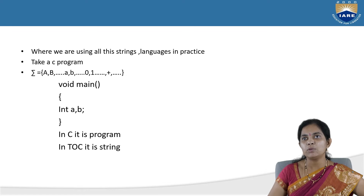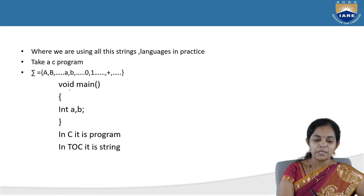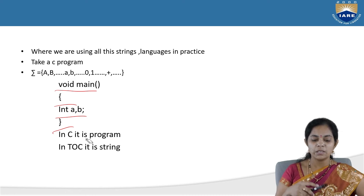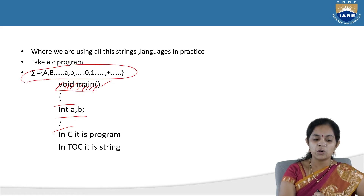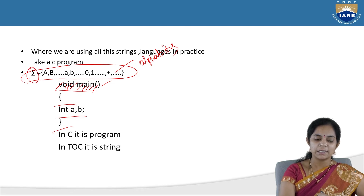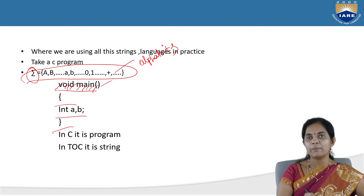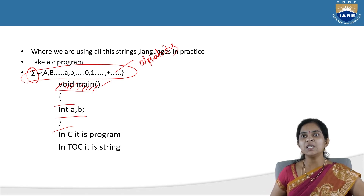Where is TOC used in real time? Here is the example of a C program. The code contains strings — like 'void main' — everything is counted as a string. So sigma contains capital A–Z, small a–z, 0–9, plus special symbols. These are all alphabets contained in sigma. In C it is a program; in TOC it is a string.